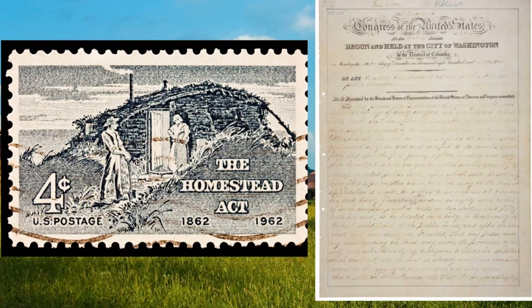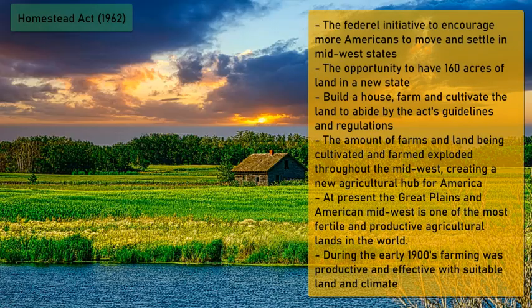The Homestead Act enabled the average person older than 21 — typically from East Coast states — to move west, build a home, and receive 160 acres of public land for a dollar. They would use that land to farm, cultivate crops, and raise animals. This benefited both the individual and the country by producing more food and enabling growth.